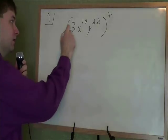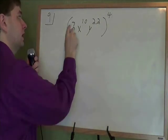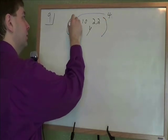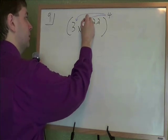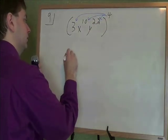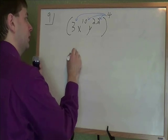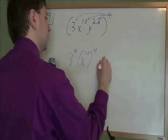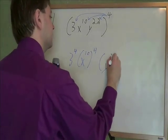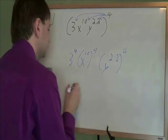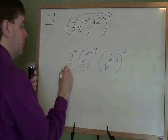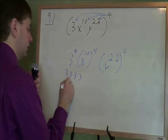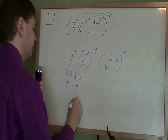On this problem, we've got a lot of things in parentheses all raised to the power of 4. As long as this is all multiplying and dividing in here, there's no adding, no subtracting, we just give each piece its own power of 4. So we've got 3 to the power of 4. We've got x to the 10 to the 4. And we've got y to the 2.2 to the 4. 3 to the 4 is 3 times 3 times 3 times 3. 3 and 3 is 9, and 9 and 9 is 81.